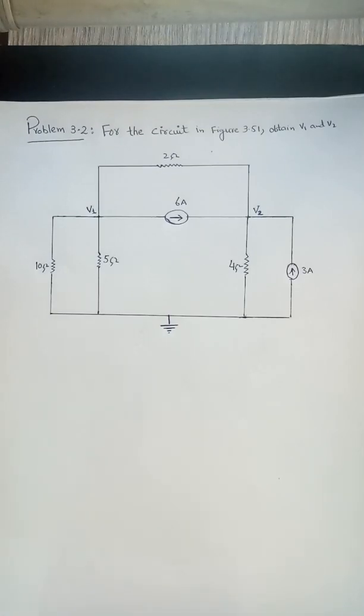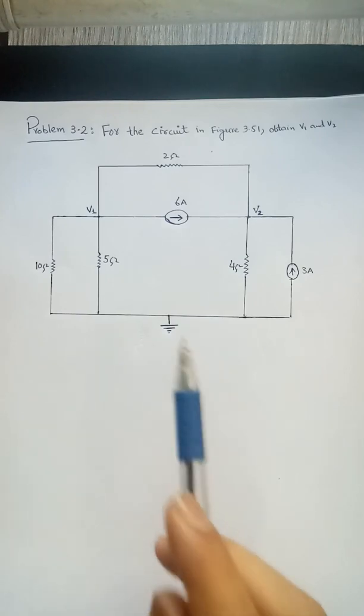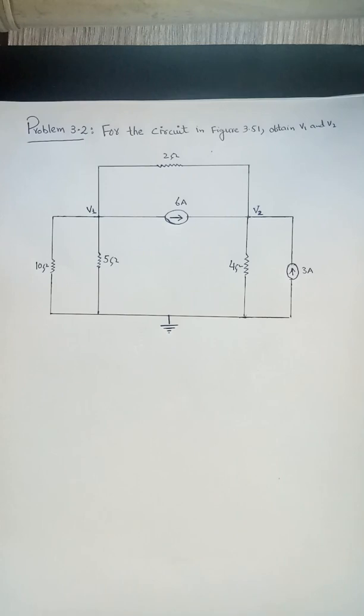Bismillahirrahmanirrahim. In today's video session we are going to solve an exercise problem, problem 3.2 from the book Fundamental of Electric Circuits. The problem is for the circuit in figure 3.51, obtain V1 and V2. So we are going to find V1 and V2 in this particular circuit.